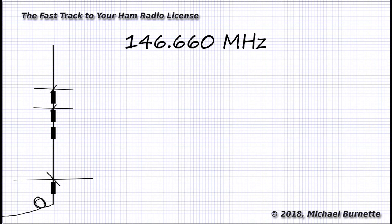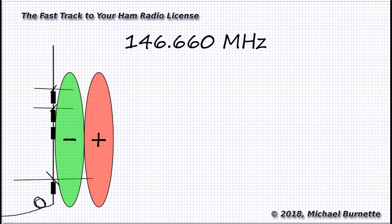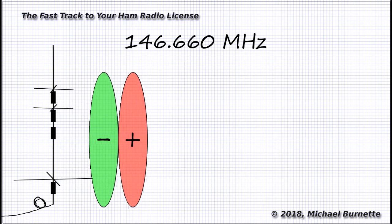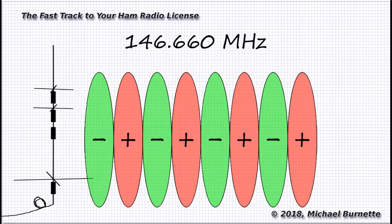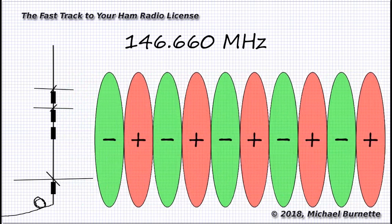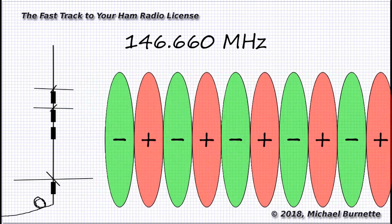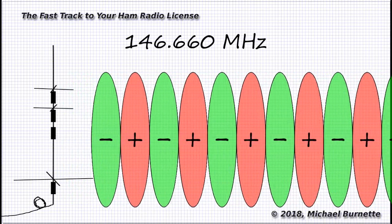that means that 146,660,000 times a second, that antenna is going to send out one electromagnetic wave consisting of a positive pulse of energy and a negative pulse of energy. Each wave is going to take off at the speed of light and keep traveling at that speed forever.